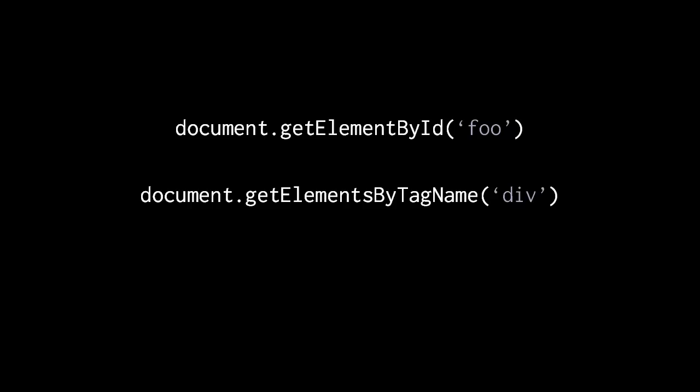Another essential method of the document object is createElement which, as the name implies, creates a new element which you can then insert anywhere into the DOM. So you can actually change the page on the fly by creating some element — like say a paragraph — and then inserting it somewhere.